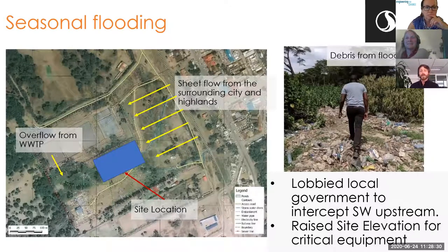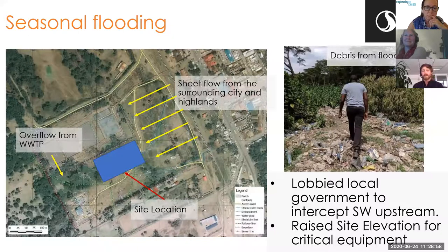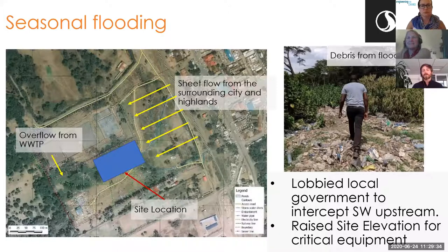Seasonal flooding was another major issue. Looking at the Naivasha town map, the hilly terrain creates sheet flow across the site during the rainy season. Worse, the wastewater treatment plant to the north actually overflows raw sludge onto the site location during parts of the year. Early in the project, we lobbied the government to intercept that flow along a main road and funnel it into an existing ditch. They agreed to take on that task, but knowing the risk is large, we still raised our site to protect critical equipment during the rainy season and added ditches and canals — while still relying on the government for that primary diversion.